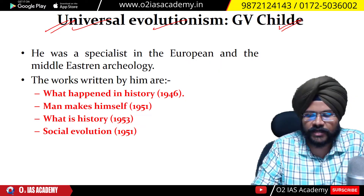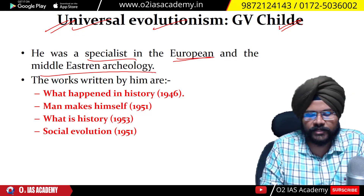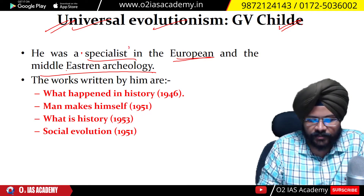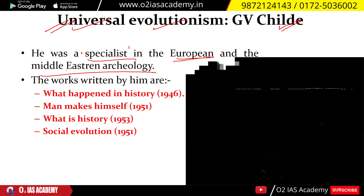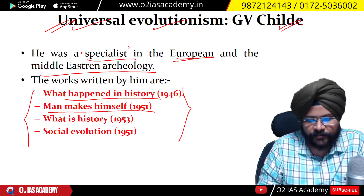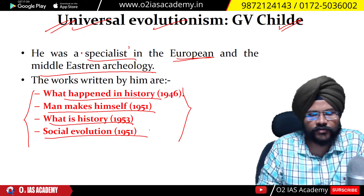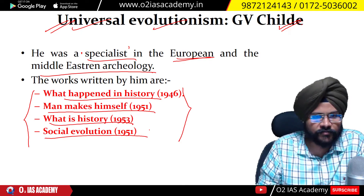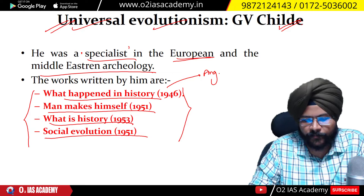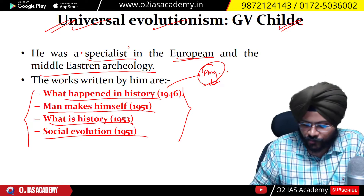Universal evolutionism is given by G.V. Childe. G.V. Childe was a specialist in European and Middle Eastern Archaeology. The works written by G.V. Childe include: What Happened in History, Man Makes Himself, What is History, and Social Evolutionism. These are works of archaeology but they give very big insights into evolutionism.